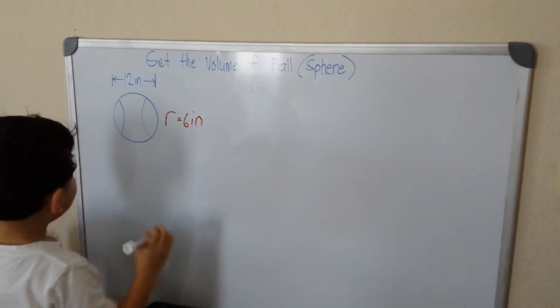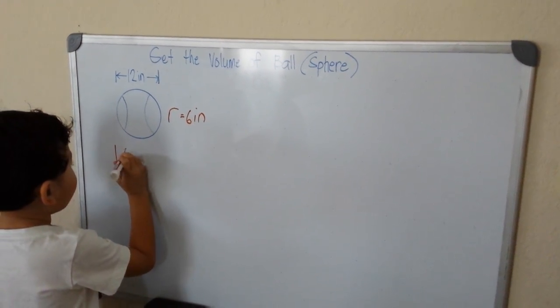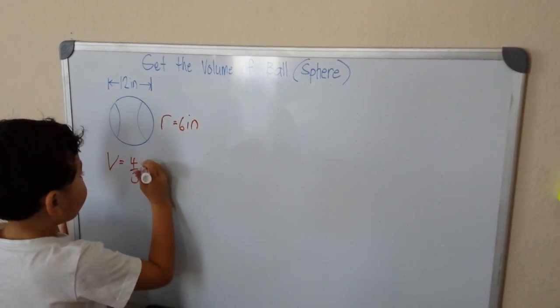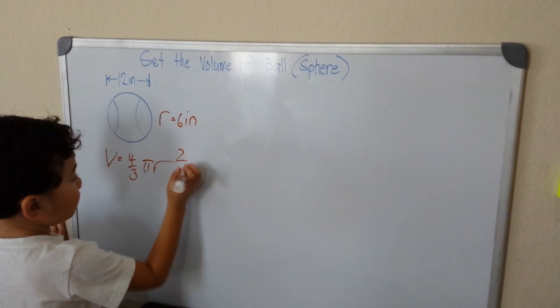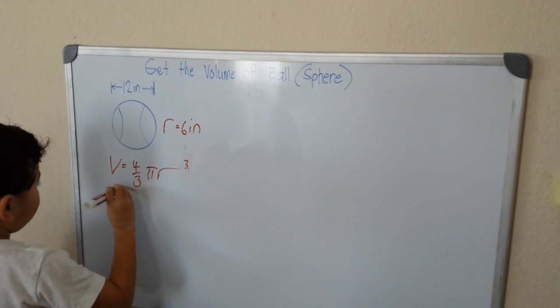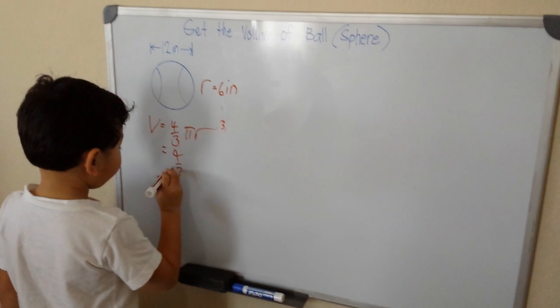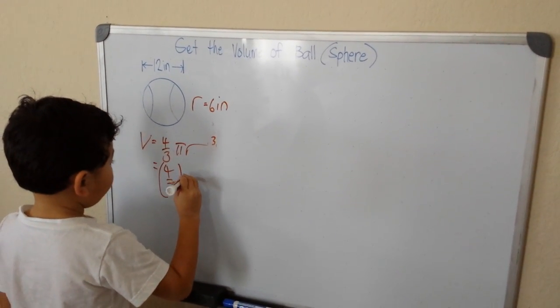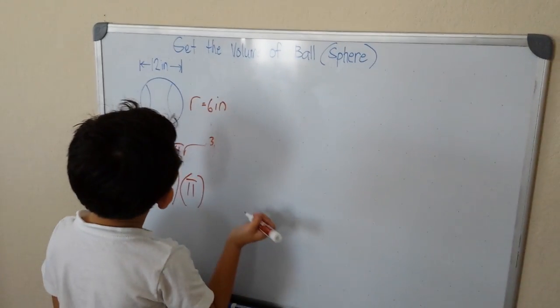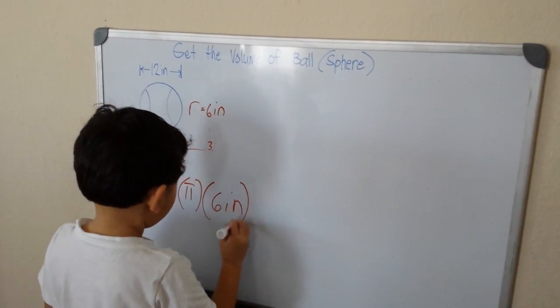The volume formula is V equals four over three times pi times r cubed. So we get four over three and put it in brackets, then pi, and r equals 6 inches.